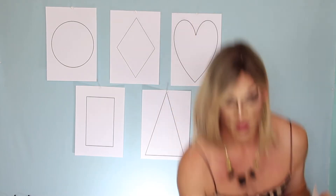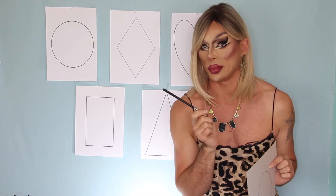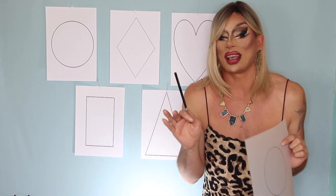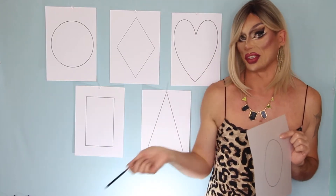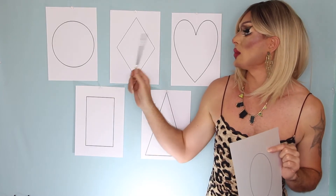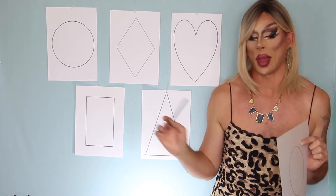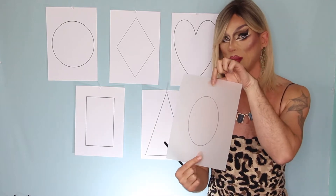If you follow me on this channel, you probably already know that we talk about face shapes and hairstyles. This is basically the same thing, just for makeup. We have five different face shapes: round, diamond, heart, square, and triangle.